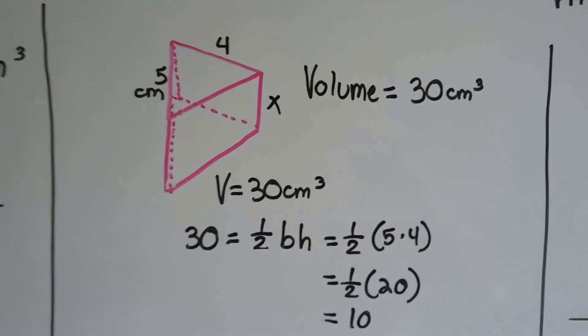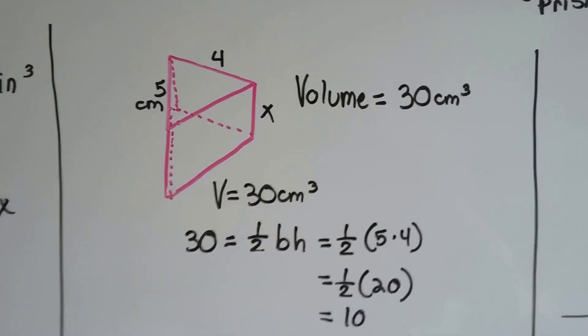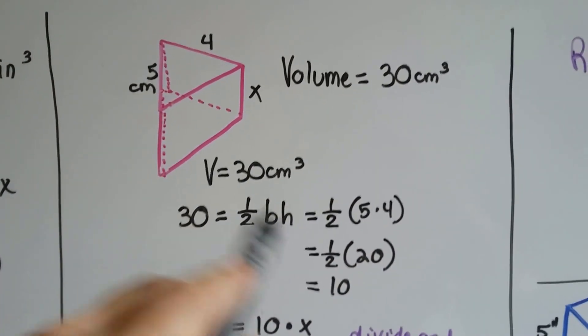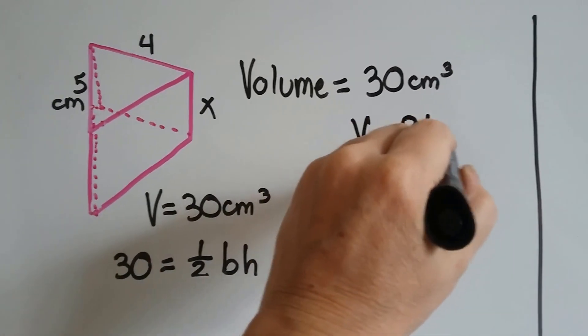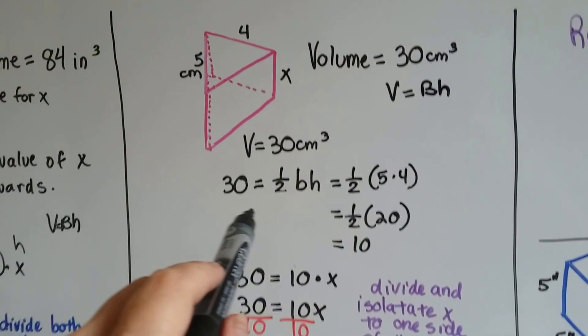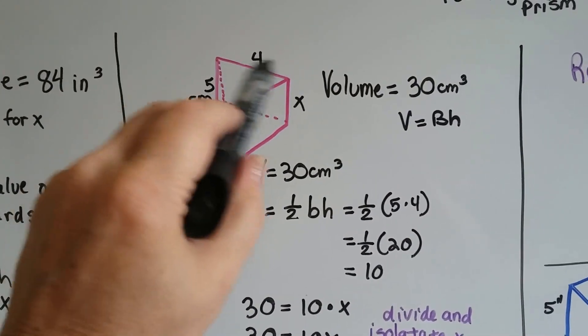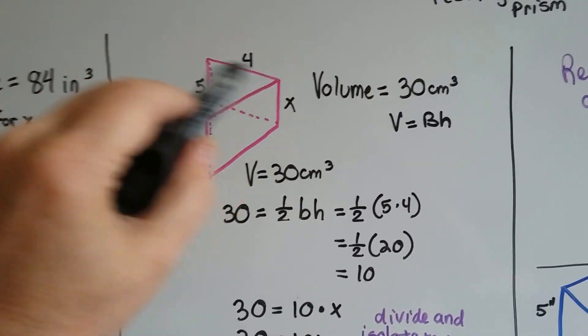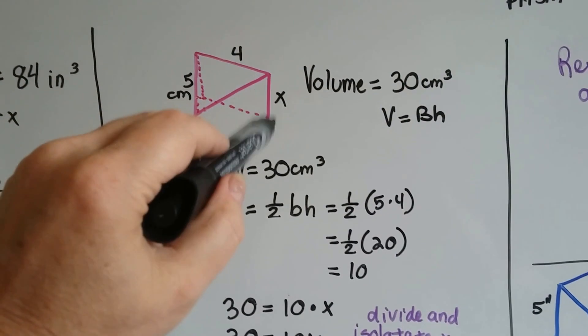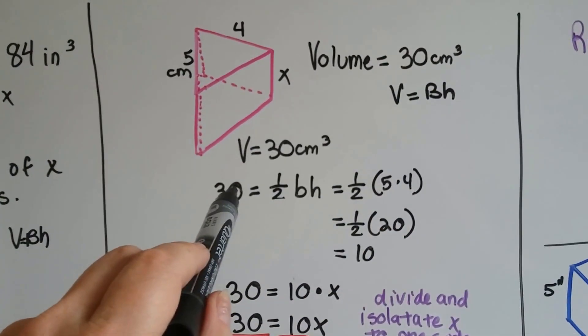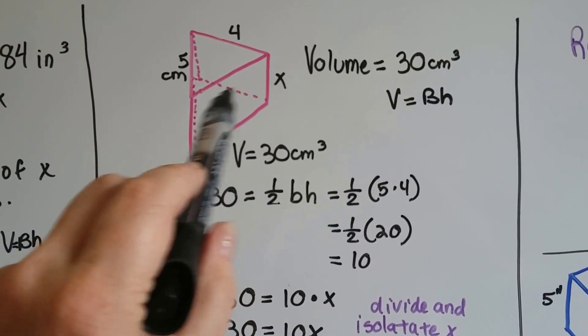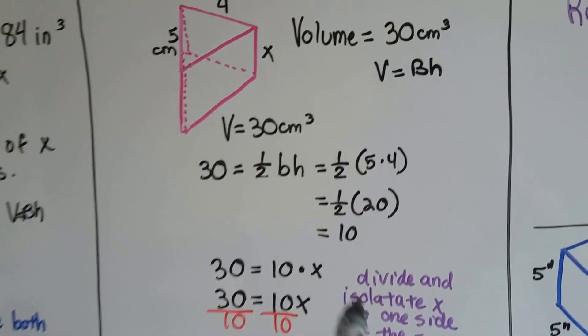What if we have a triangular prism and we're missing the height? Same thing, we plug in the formula V = bh. We have to find the base first, and we know that it's four centimeters this way and five centimeters this way, but we don't know the height.